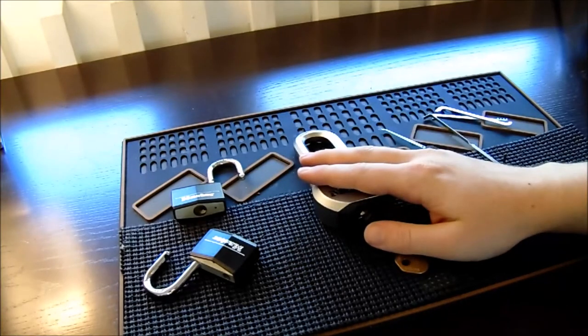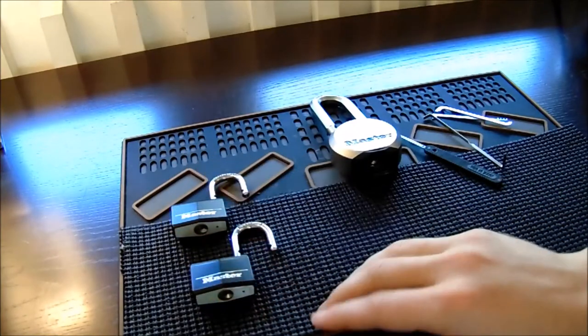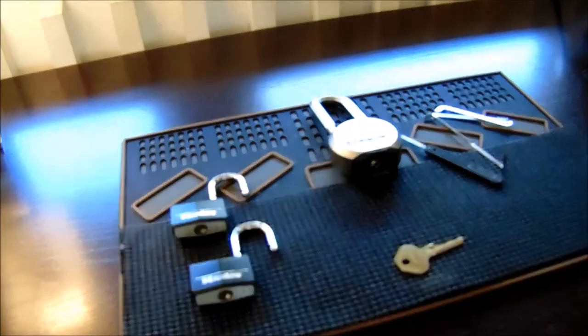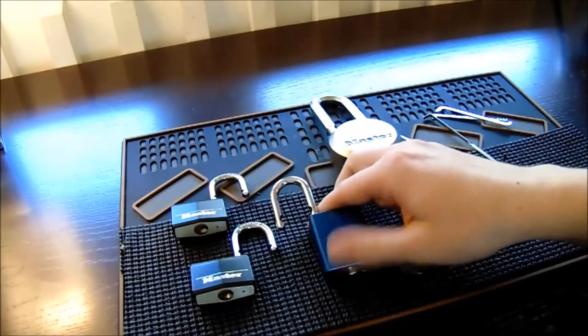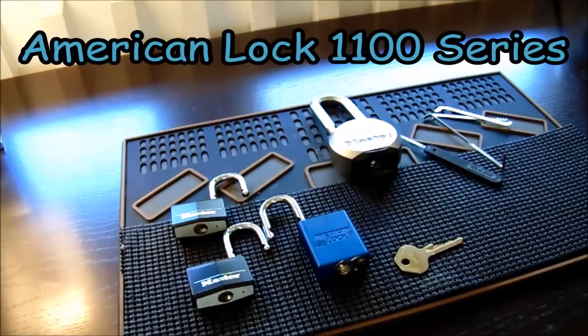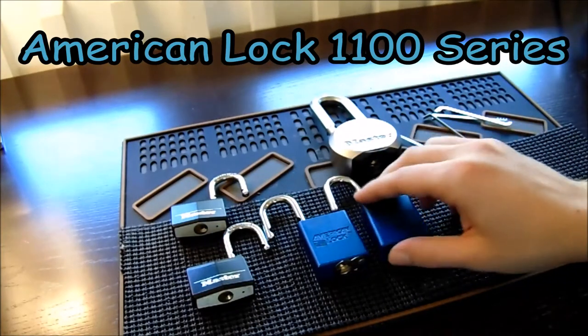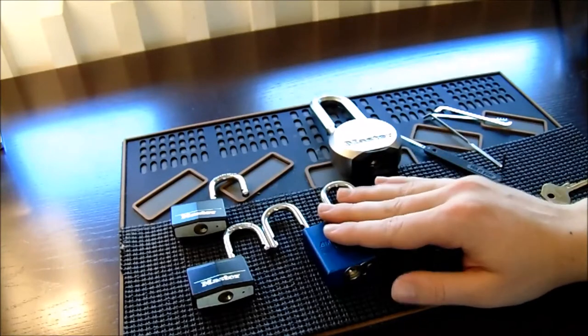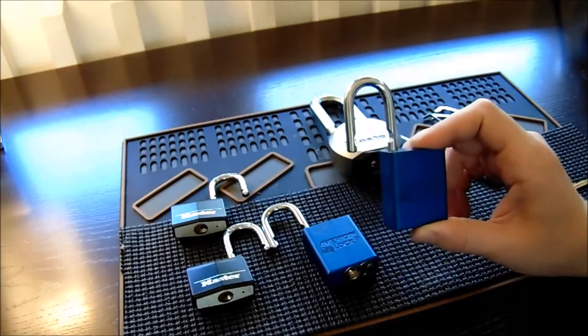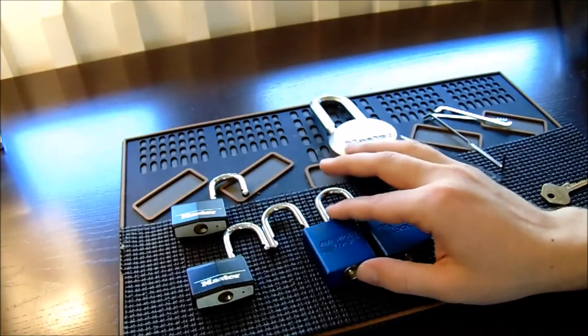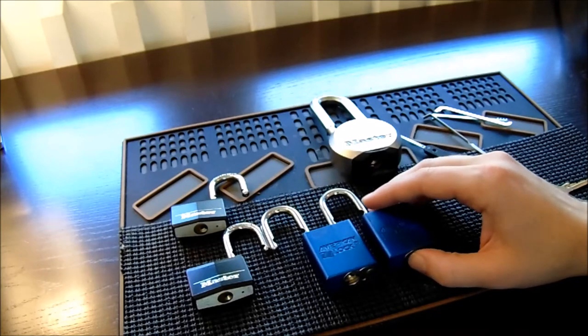But going back to the storage container, I tried to find a happy medium based off of the locks I had on hand. So what I ended up doing was I added some American 1100 series as the replacement. The only troubling thing is that the storage container can't take much thicker of a shackle than on my 1100 series. So at the end of the day, physical resistance is going to win out over pickability.